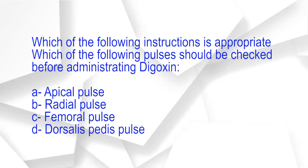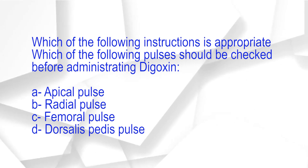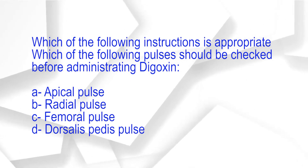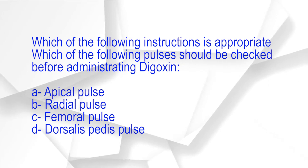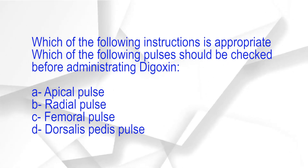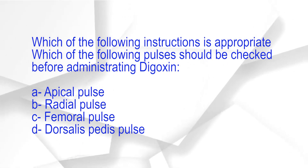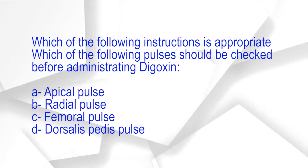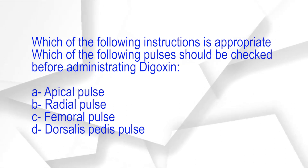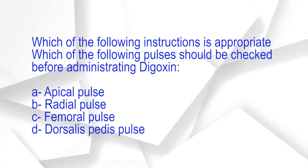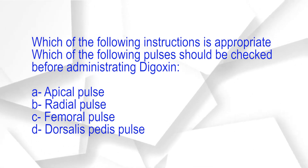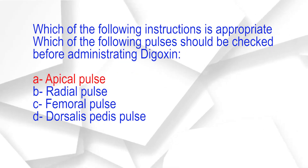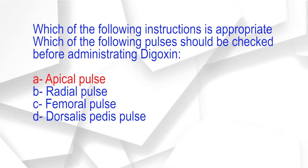Which of the following pulses should be checked before administering digoxin? A. Apical pulse. B. Radial pulse. C. Femoral pulse. D. Dorsalis pedis pulse. The correct answer is option A: Apical pulse.